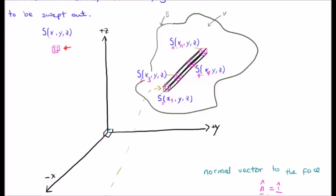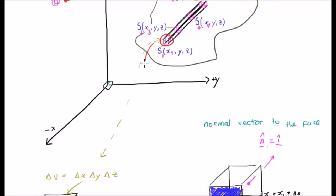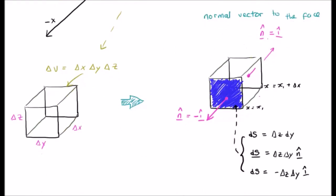We are going to select one of these particular cubes and look at it in greater detail. The volume bound by this particular surface is going to be equal to δx δy δz — the change in volume is δx δy δz. That's just one of these particular cubes. They don't necessarily have to be cubic, but it's easier to think about them as cubes. Now it's important to look at the normal component.